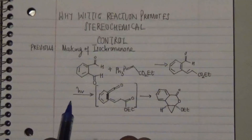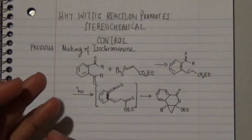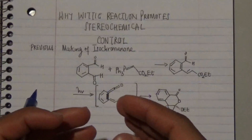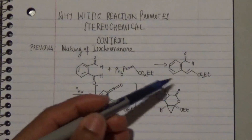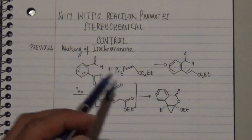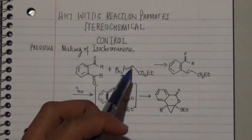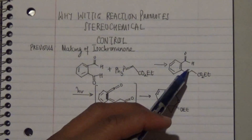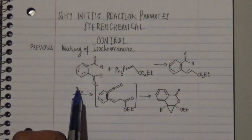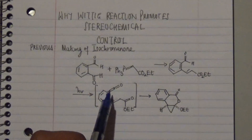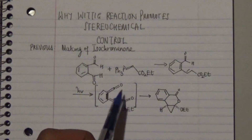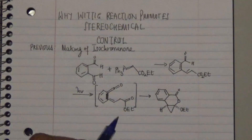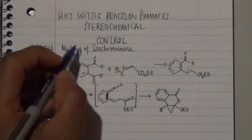Hello everyone, welcome back to my channel. In our previous video we looked at the Grignard reaction as it applies to the making of isochromenium. Isochromenium is made from the reaction of these two reagents to produce this particular product. Once this product is influenced by the presence of light, this leads to an intermediate transformation which arrives at a final product by a particular cyclization reaction.